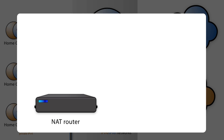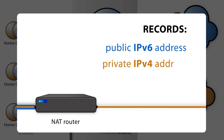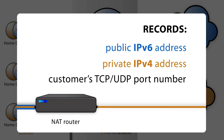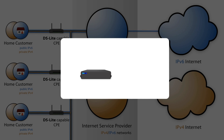In DS Lite, the translator box records the public IPv6 address, the private IPv4 address, and the TCP or UDP port number of the customer to keep track of who uses which connection.